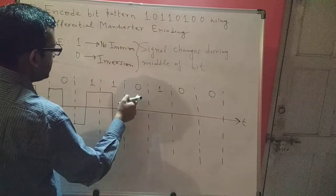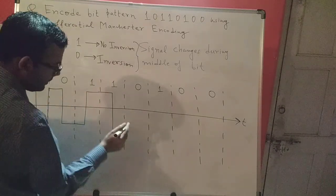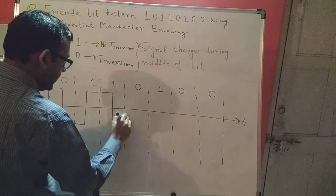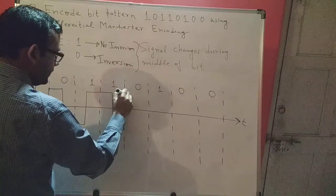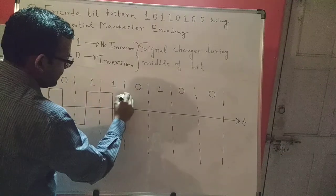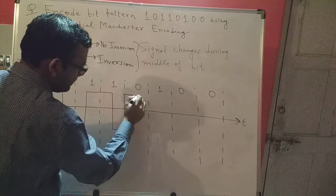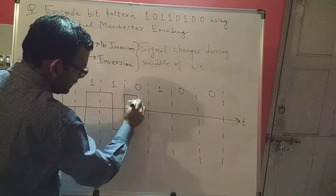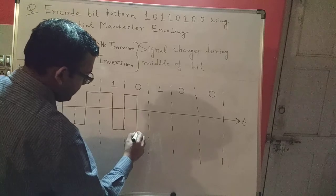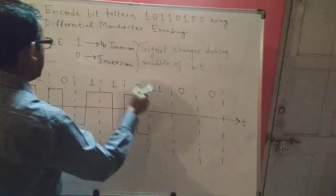Now if I have a zero — zero represents inversion. So if I'm below the time axis I need to go back up, because it represents a zero. I'll proceed, and at the middle of the bit the signal will change. Now I find a one.